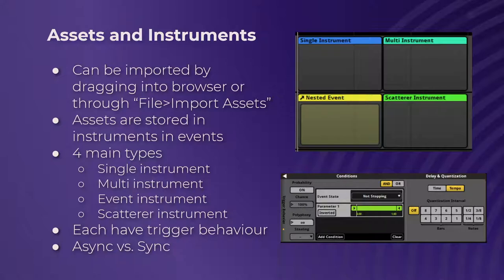Instruments are basically a fancy way of saying a thing that makes sound — an audio file. A single instrument holds one audio file. A multi-instrument can hold as many as you want — I've used quite a few files in one before. Essentially it's a playlist of instruments, and you can shuffle them, randomize them, or play them back sequentially. You can even put multi-instruments inside multi-instruments if you want some weird recursive thing going on. Multi-instruments and single instruments are probably the two main things you're going to be using.